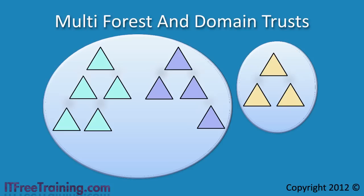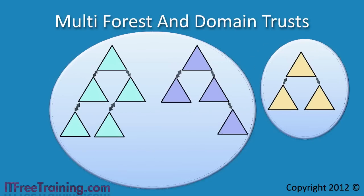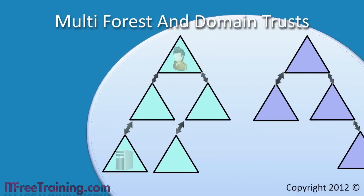Let's go back to transitive trusts. Every child domain is connected to its parent domain. If the parent wants to access a resource in the bottom domain, it will go through the transitive trust of the child domain. The child domain will then pass the request through its trust relationship to its child domain. That's what a transitive trust is — it allows a trust to be extended outside the domain to which it is directly connected.